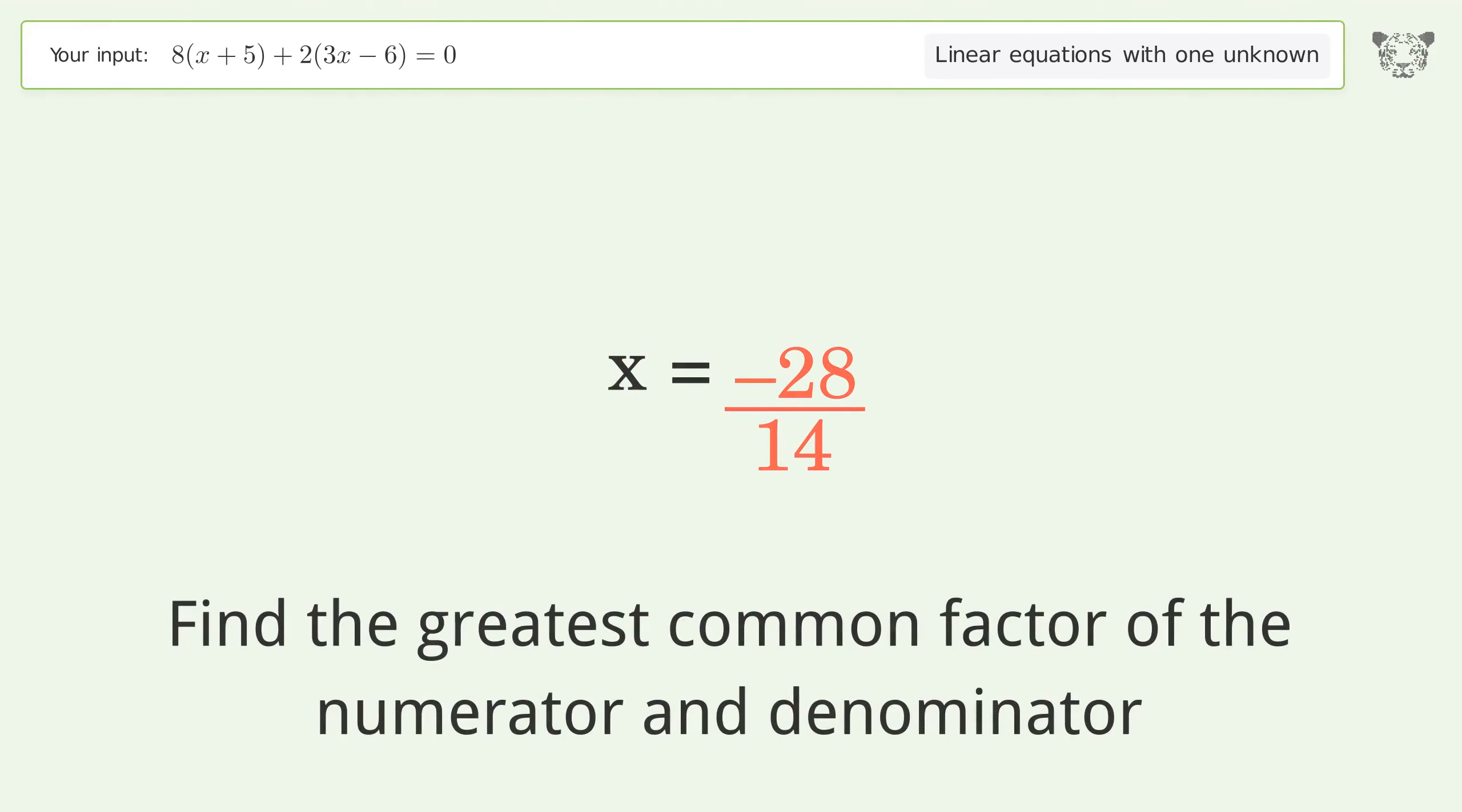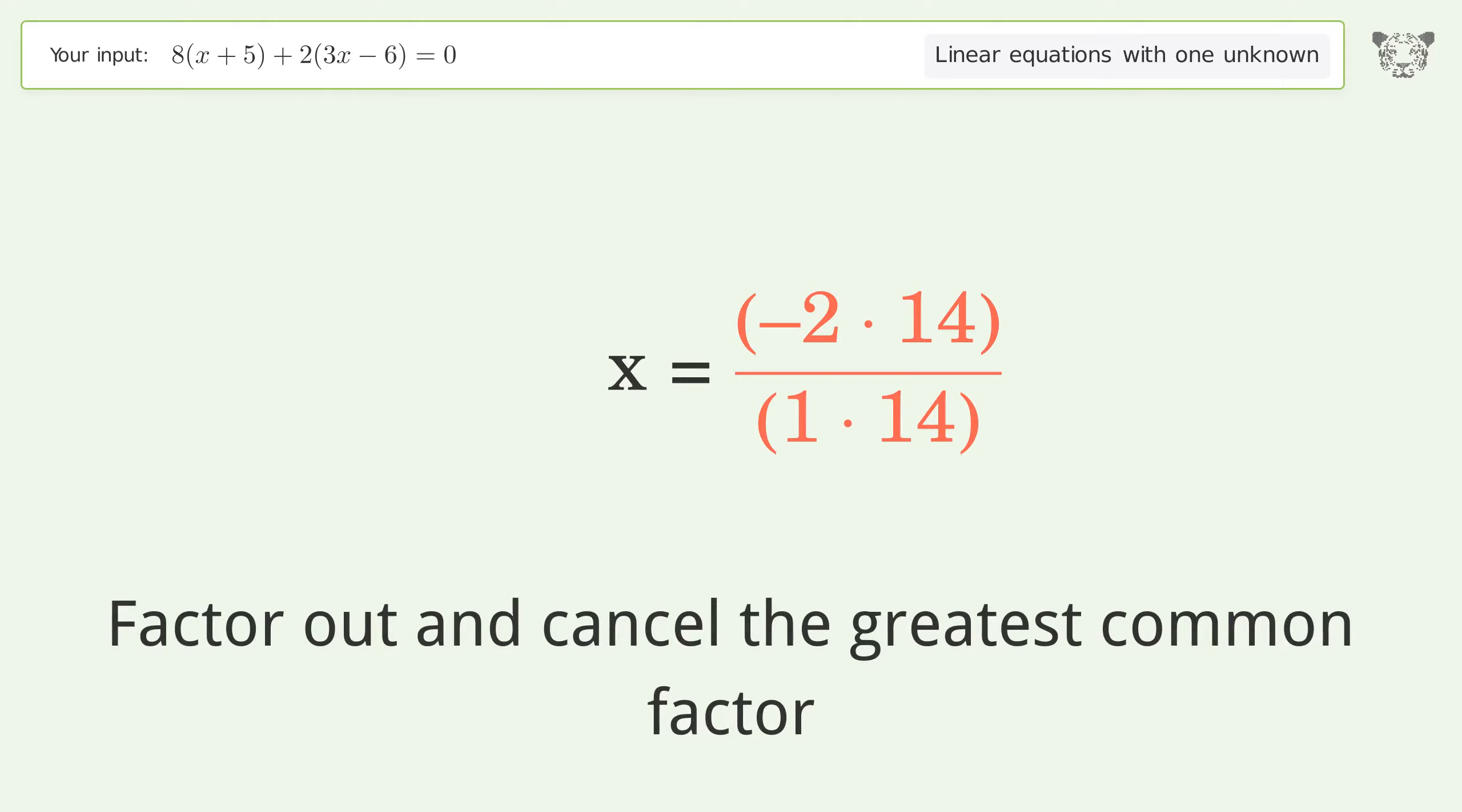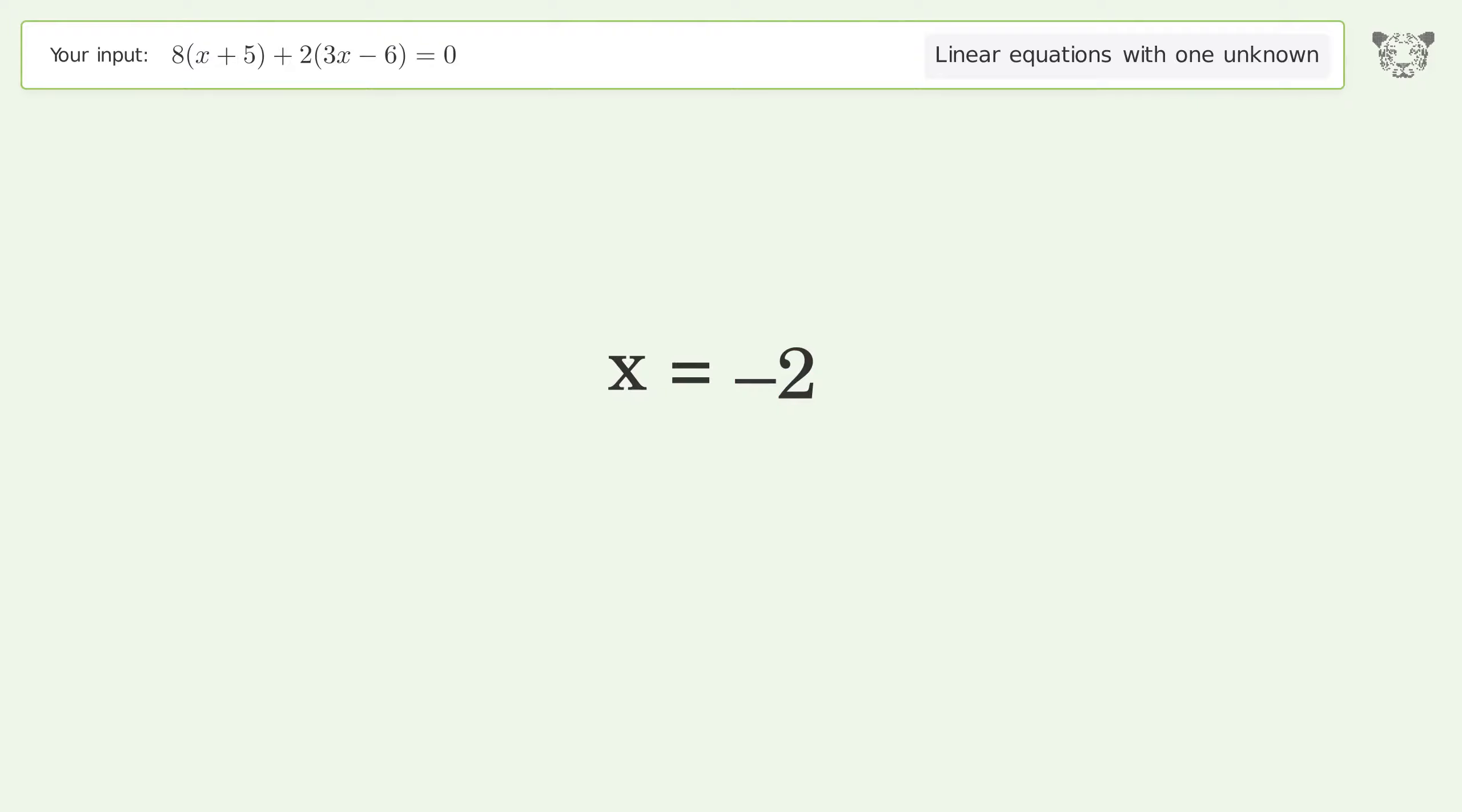Find the greatest common factor of the numerator and denominator. Factor out and cancel the greatest common factor. And so the final result is x equals negative 2.